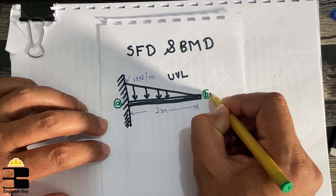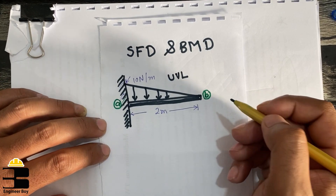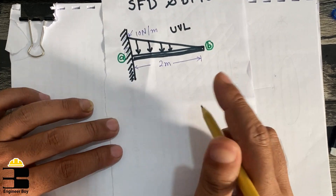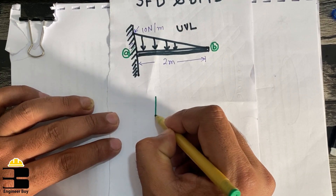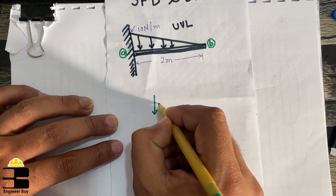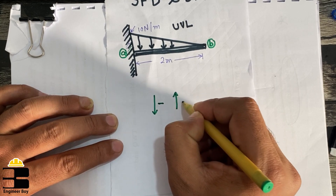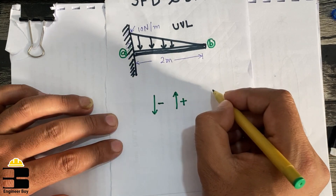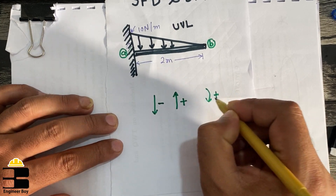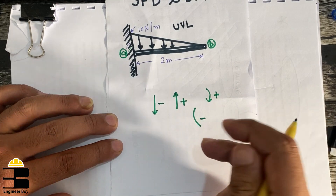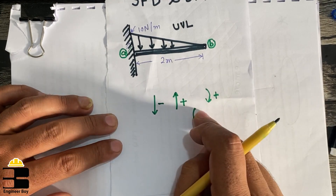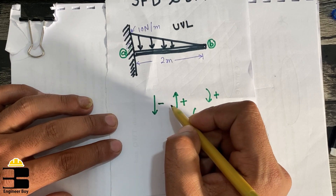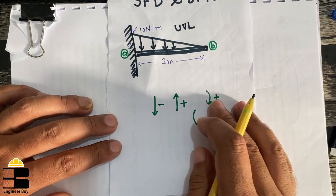So we have two points along the beam. For our sign convention: downward forces will be taken as negative and upward forces as positive. For moments, clockwise will be positive and anti-clockwise will be negative — though you can interchange them, it doesn't matter. That's your annotation.